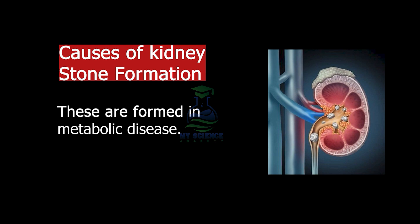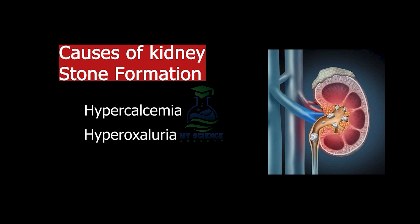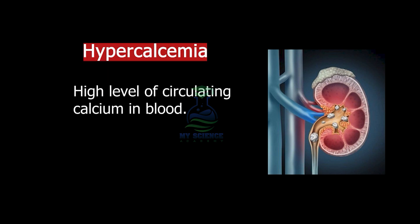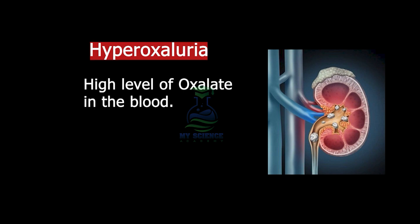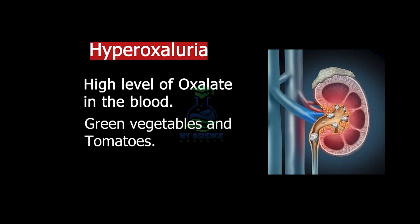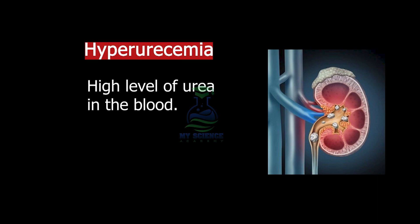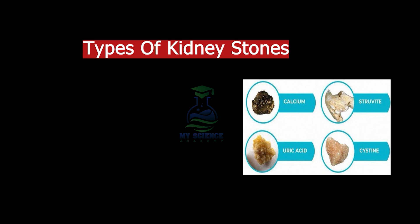Kidney stones are formed in metabolic diseases like hypercalcemia, hyperoxaluria, or hyperuricemia. Hypercalcemia is when there is a high level of circulating calcium in the blood, due to other diseases like hyperthyroidism. Hyperoxaluria is when there is a high level of oxalate in the blood; oxalate is present in green vegetables and tomatoes. Hyperuricemia is due to a high level of uric acid in the blood.